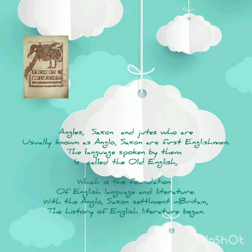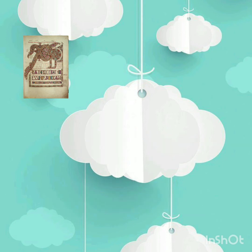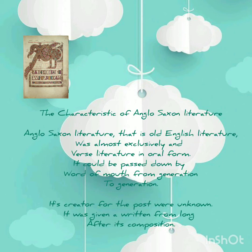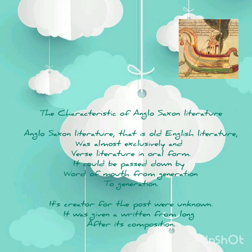The Angles, Saxons, and Jutes, usually known as Anglo-Saxons, are the first Englishmen. The language spoken by them is called Old English, which is the foundation of the English language and literature. With the Anglo-Saxon settlement in Britain, the history of English literature began.